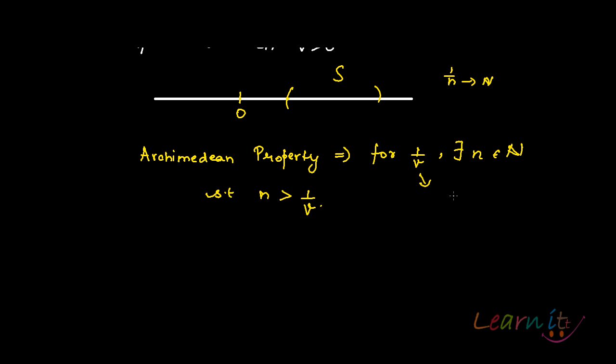Now 1/v would be any real number. So for real numbers I have this that there should be a natural number greater than that. So 1/v is a real number and by Archimedean property I know that there exists an n such that n is greater than 1/v.